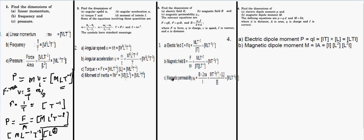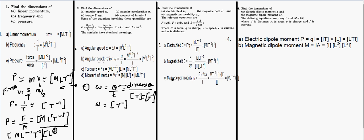Angular speed refers to speed in circular motion. The formula is ω = θ/T, where θ is the arc angle. Angle is dimensionless — it has no SI unit and no dimension. For time we have T, so the overall dimension of angular speed (omega) is T⁻¹.